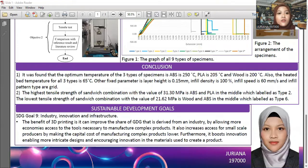For the conclusion, the optimal nozzle temperature of the three specimen types are: ABS at 250°C, PLA at 205°C, and wood at 200°C. The heated bed temperature for all three types is 65°C as a fixed parameter. Other fixed parameters include layer height at 0.15 mm.